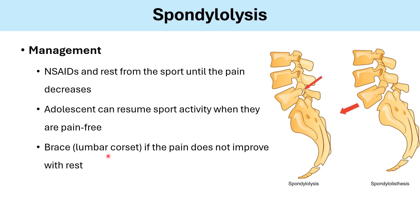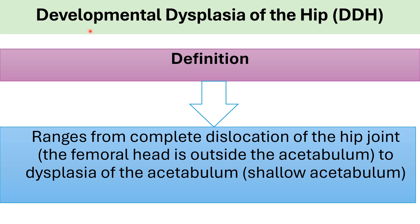Hip disorders: developmental dysplasia of the hip, or DDH. Very important — you cannot miss the diagnosis of DDH. DDH ranges from complete dislocation of the hip joint, meaning the femoral head is outside the acetabulum, to dysplasia of the acetabulum, which is a shallow acetabulum.